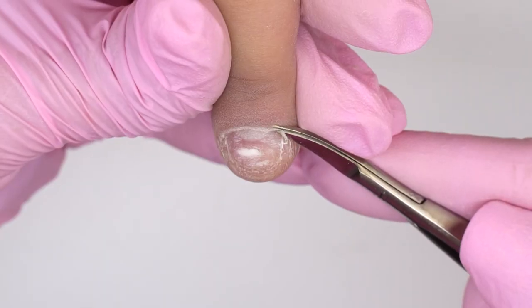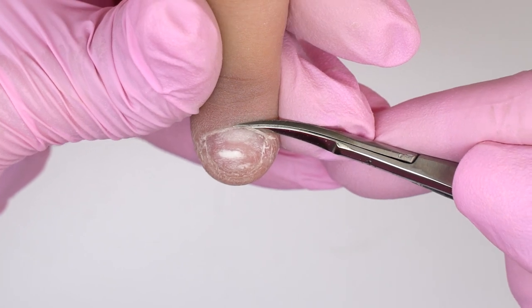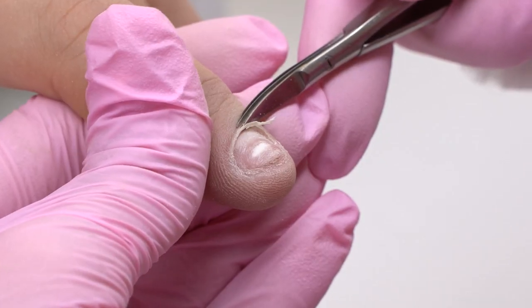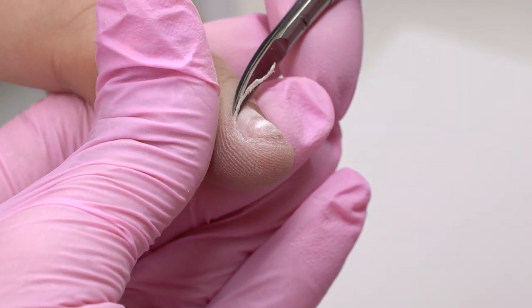I will cut the cuticle with tweezer scissors. And we'll have to cut such badly spreading cuticles twice. Cut off the main part of it first, and then we will see how clean the cuticle pocket is.